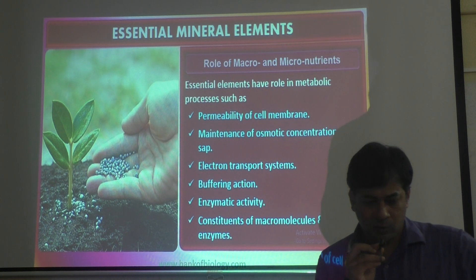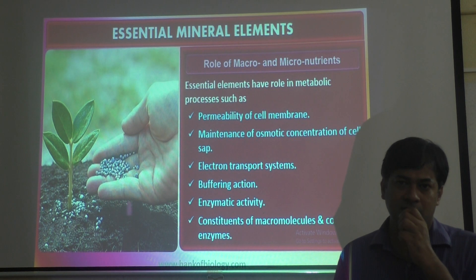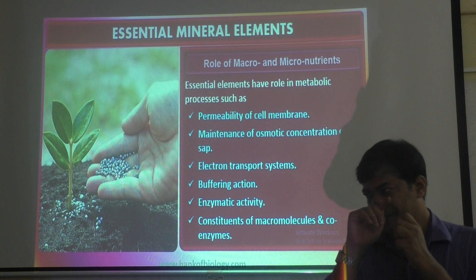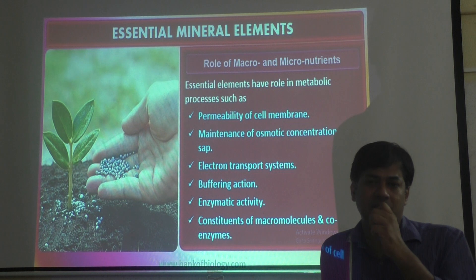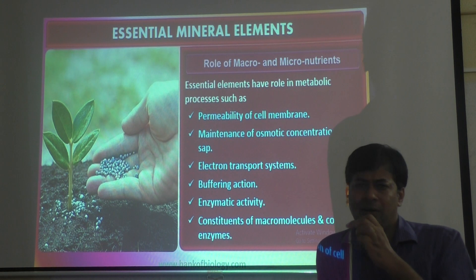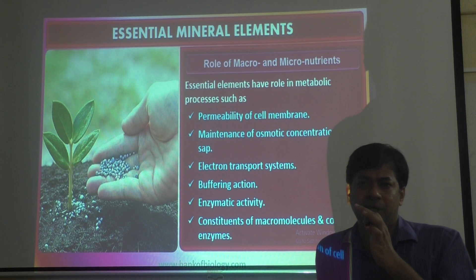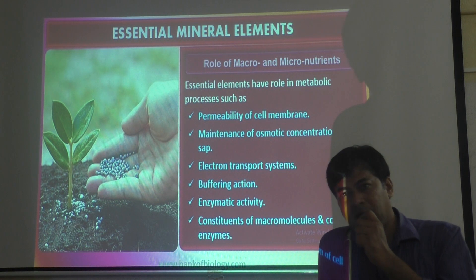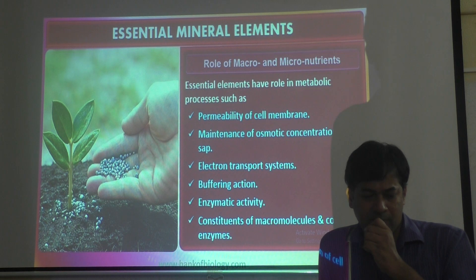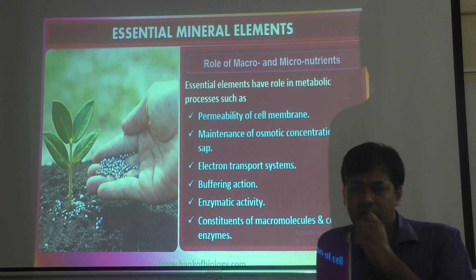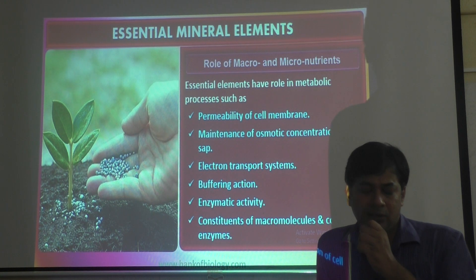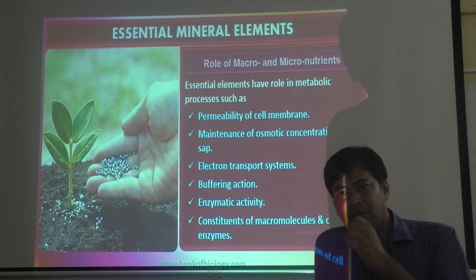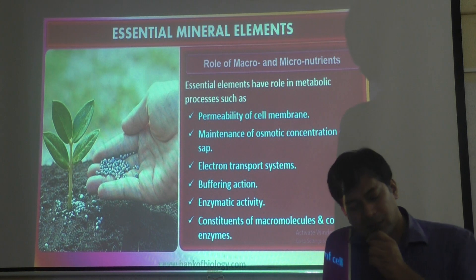Number five, enzymatic activity — if enzymes like Rubisco and PEPCASE should function properly, these minerals are required to activate them. Number six, they are constituents of macromolecules and coenzymes. To form macromolecules such as polysaccharides and proteins (molecular weight more than 1000 daltons), and to produce coenzymes like coenzyme A and NAD (nicotinamide adenine dinucleotide phosphate), phosphorus and nitrogen are required.